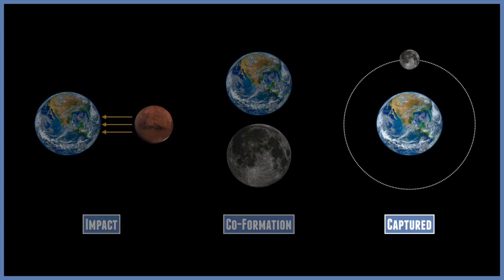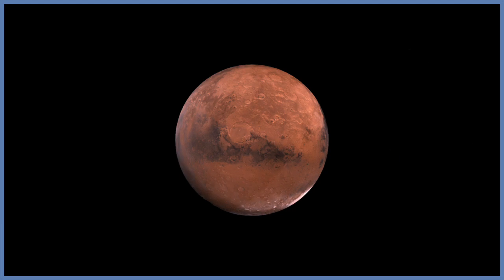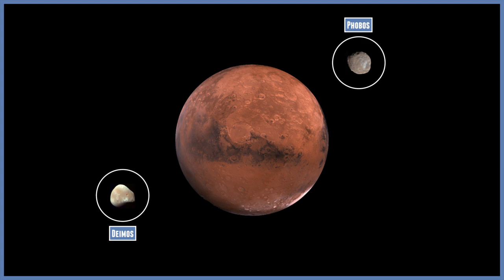The third one is called the capture theory, and this is rather plausible. A great example of this is the moons of Mars, Phobos and Deimos. These are basically captured asteroids, taken in by the gravity of Mars. So they are technically moons, even though they're not spherical.